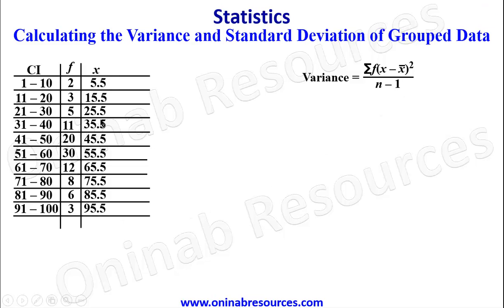And finally 91 plus 100 divided by 2 gives 95.5. And that is for the column of x, which represents the mid values for the class intervals. The next thing is to calculate x-bar, which is the mean of this grouped data.